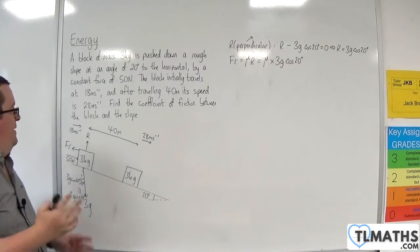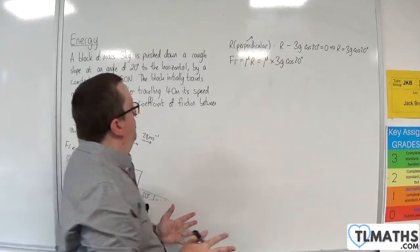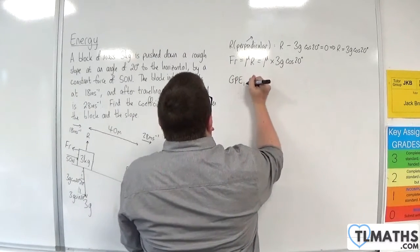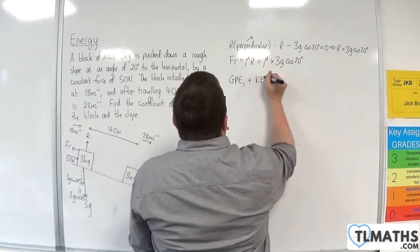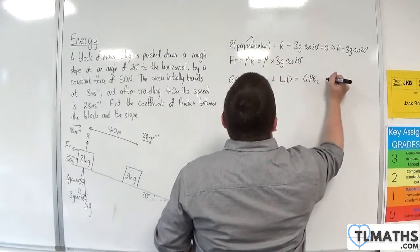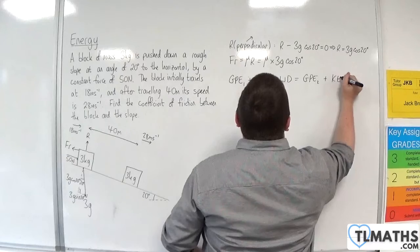So, now that we've got that in place, I can now go into the work energy principle. So the initial gravitational potential energy plus the initial kinetic energy plus or minus the work done is going to be equal to the final gravitational potential energy plus the final kinetic energy.